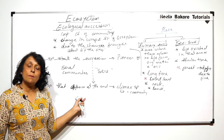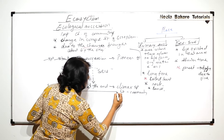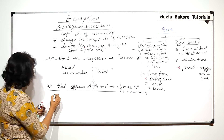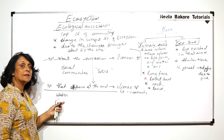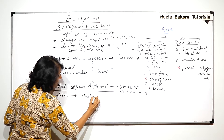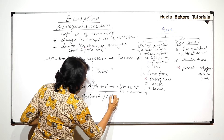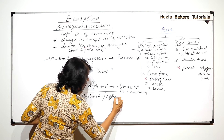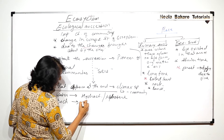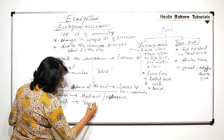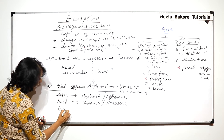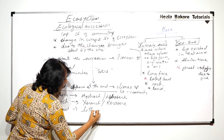One more important point: depending on the area where succession takes place, it can start in water — in which case we call it hydrarch succession, also known as hydrosere. If it starts on a rock, it is called xerarch or xerosere, and if it is on dry land, it is known as lithosere.